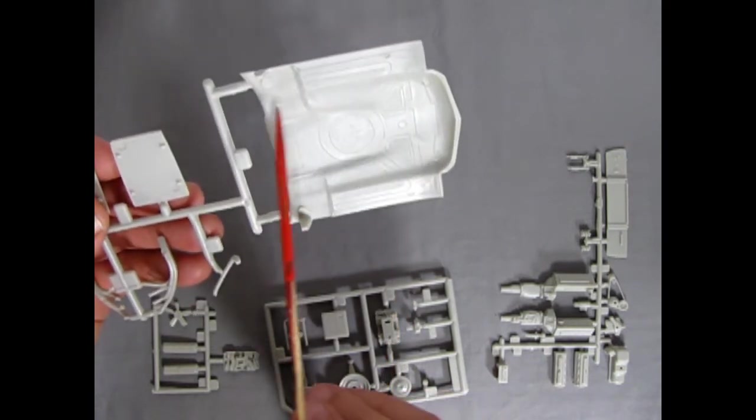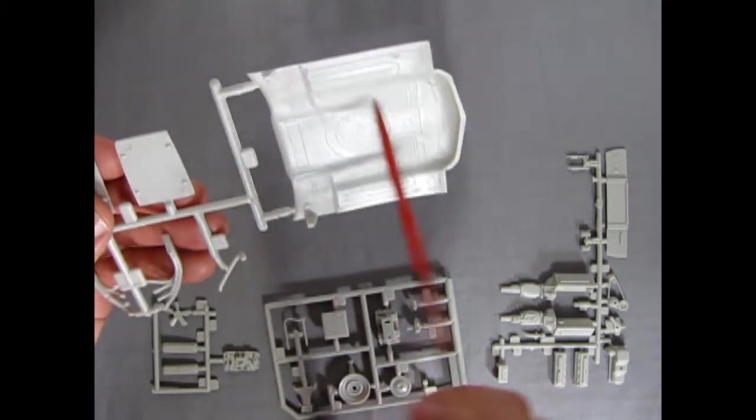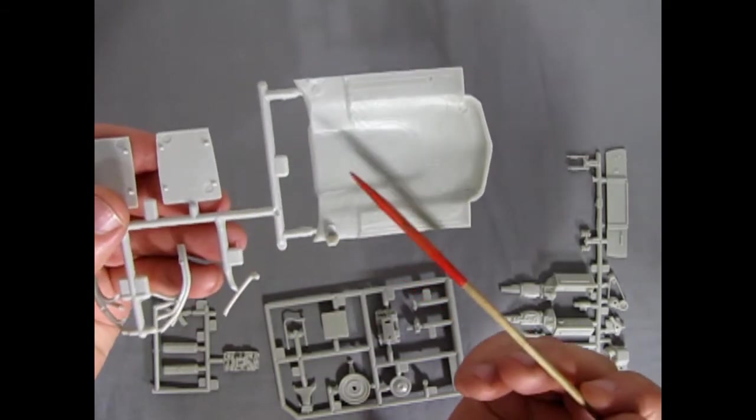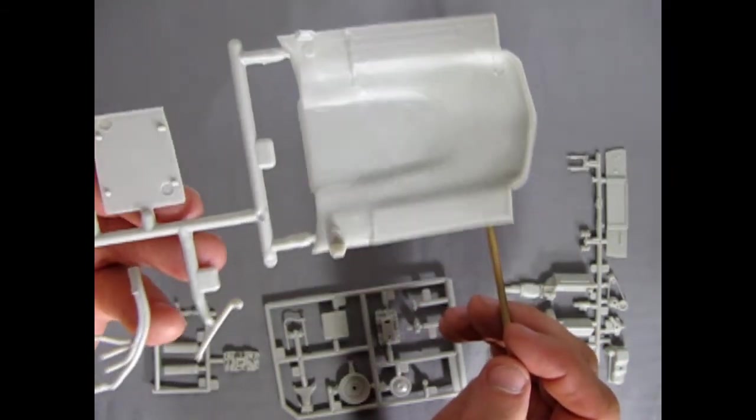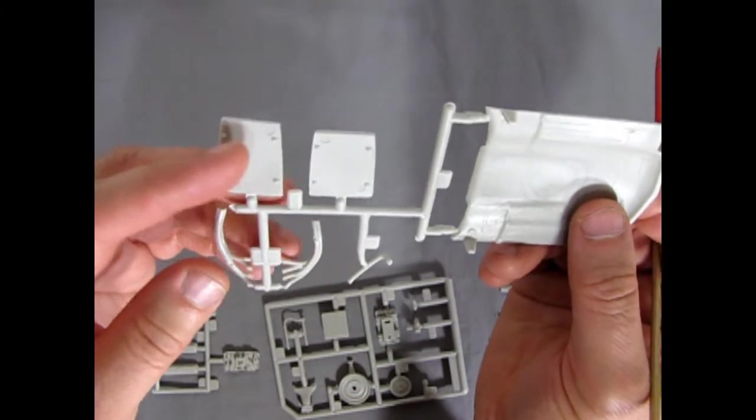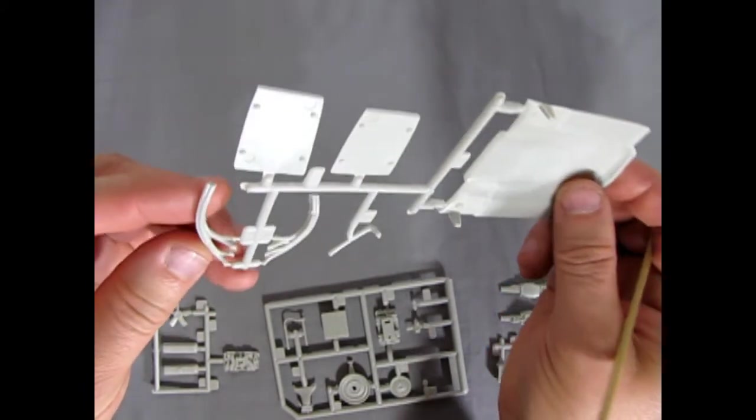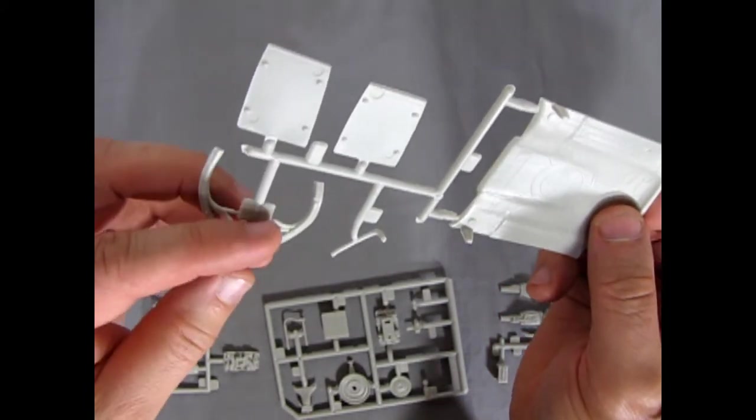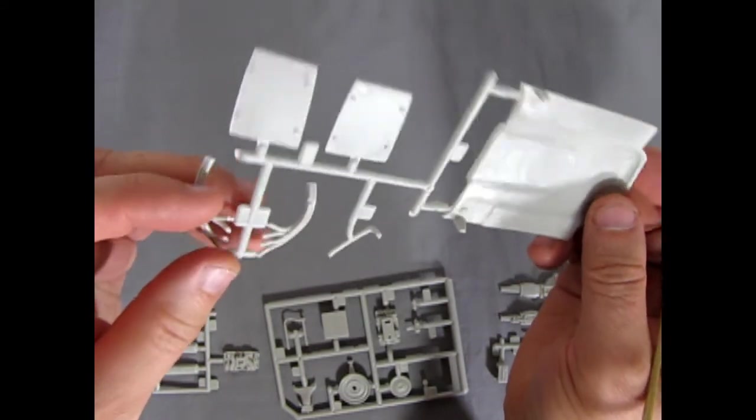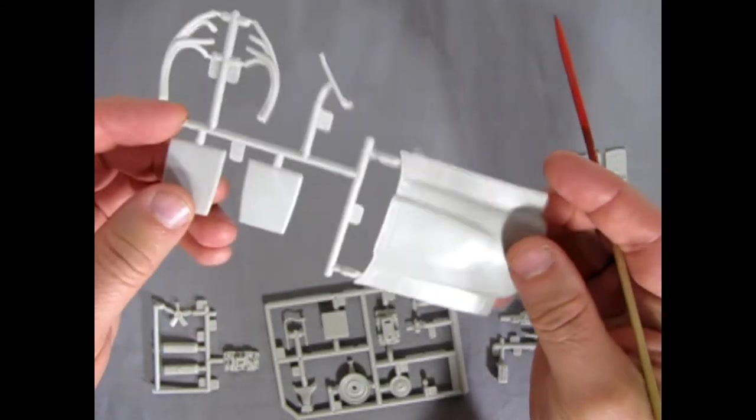There of course are some mold marks. And some raised marks up here. Which will have to be taken down. You can see them better up there. Seat backs. All this gets covered luckily. The headers have some mold marks in them. So you'll have to shape those with the number 16 hobby blade. Or fill them in.